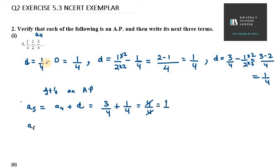Now we need to find A6. A6 will be A5 plus D. A5 is 1, so 1 plus 1/4, which by taking LCM will be 5/4.